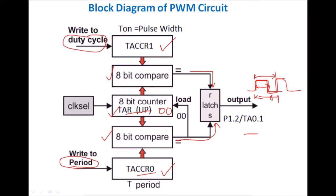This PWM output is available at pin P1.2 of the MSP430 microcontroller, that is pin 1 of the TA0 timer. The clock for this PWM signal can also be selected — the count of the TAR register is incremented based on the selected clock. This is the operation of the PWM circuit.